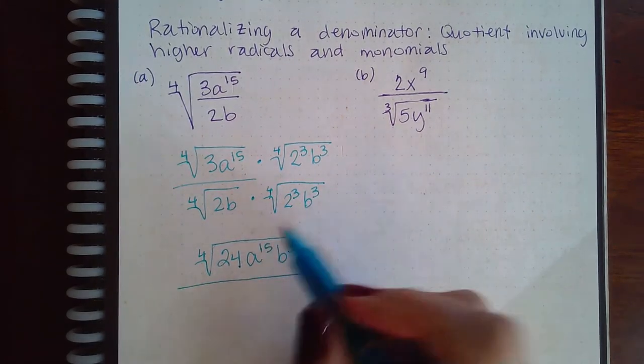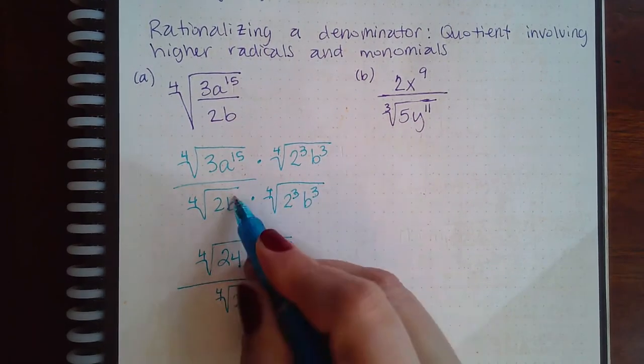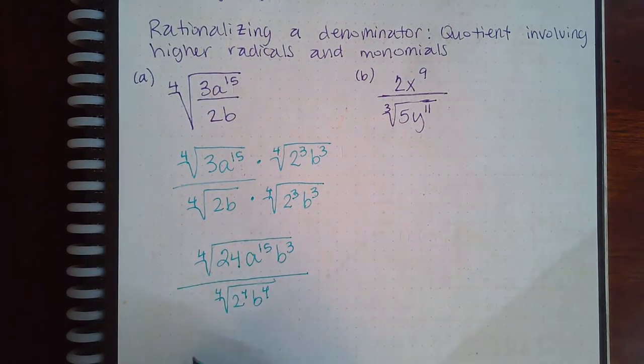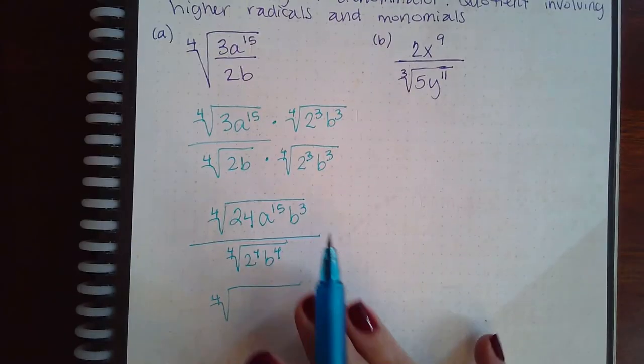At the bottom, I'll end up with 3 and 1 makes 4, and 3 and 1 makes 4. Now, for the top, you cannot simplify the 4 through to 24.